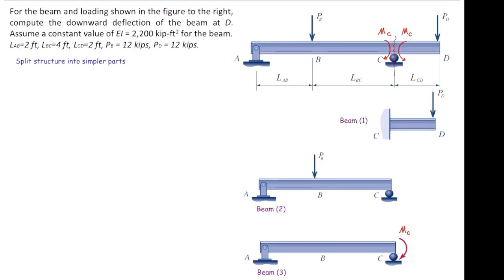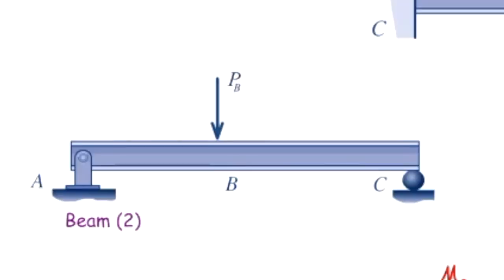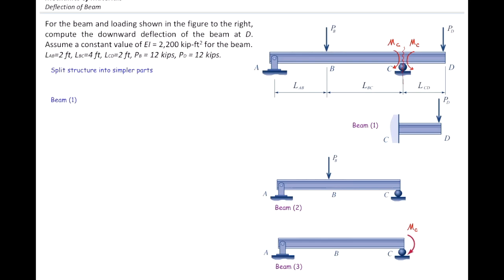So in this case we have three beams: beam number one is the cantilever beam, beam number two is the simply supported beam subjected to external load, and beam number three is the simply supported beam subjected to the hidden moment — the internal moment. Let's calculate the deflection of beam number one at point D.